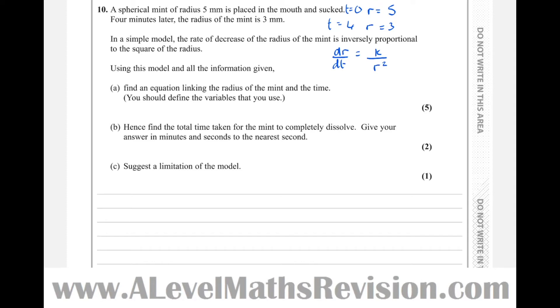So using this model and all the information given, find an equation linking the radius of the mint and the time. You should define any variables that you use. So T equals, this is part A, time in minutes from the moment the sweet is placed in the mouth. R equals the radius of the sweet in centimeters.